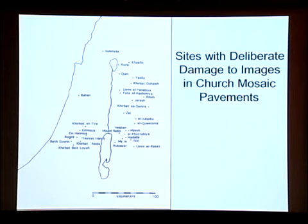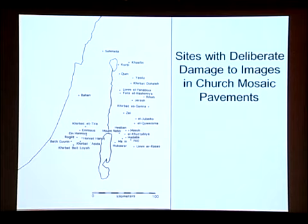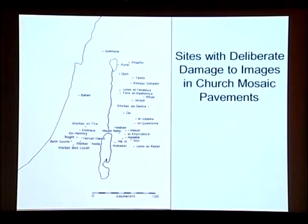I drew this map a few years ago. There are further excavations every year that produce one or two more examples, and this map has filled up a little bit since I drew it. But it's, again, a peculiarity — the limited geographical area where this damage has occurred. It's only within modern-day Israel-Palestine and Jordan, nowhere else. Not in Syria, not in Lebanon, not in Egypt, not in North Africa, not in Anatolia, Greece, or the Balkans. Nowhere else does this damage occur except in this small geographical area.